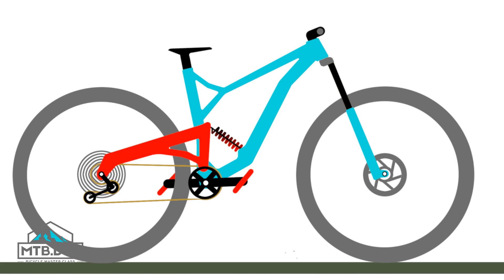To understand the differences, we're going to start with a few assumptions. One, the bike is on level ground. Two, the suspension is at rest or fully extended. And three, fork travel is parallel to the head tube angle.